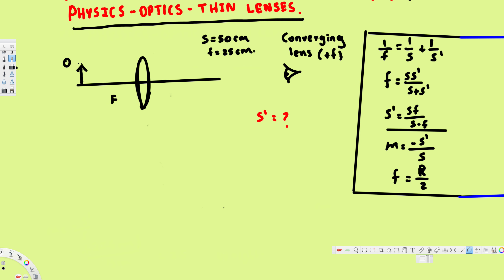Let's try this problem. We have a converging lens with a focal length of 25 centimeters. Let's draw the focal points — one on each side, each 25 centimeters from the lens. The object distance is given as 50 centimeters, which is two times the focal length. The question asks us to find the image distance.